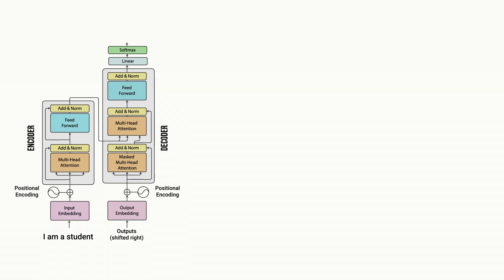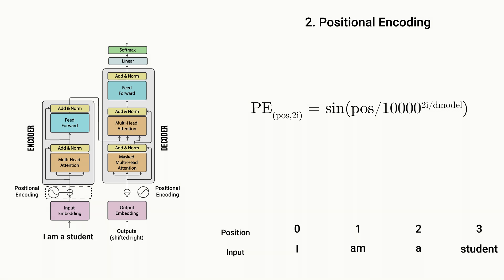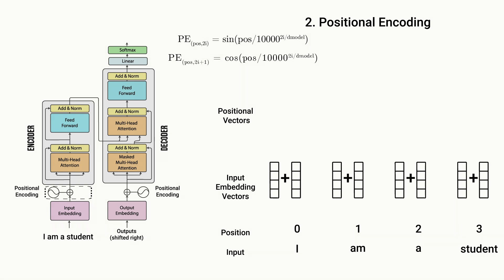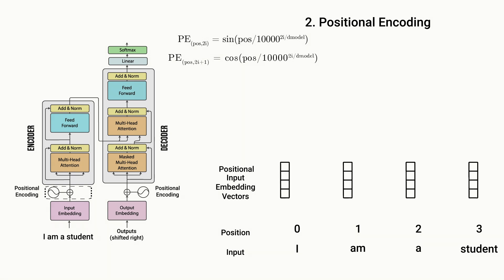And seeing as the transformer doesn't have a sequential architecture anymore, the authors needed to find a way to let the network know the position and order of words in a sentence. To do this they use something called positional encodings to inject the information about the position of each word into its embedding representation. For even positions a sine function is used to create the positional representation, and for odd positions a cosine function is used. These positional representations are then added to their corresponding embedding representation to create positional input embeddings.